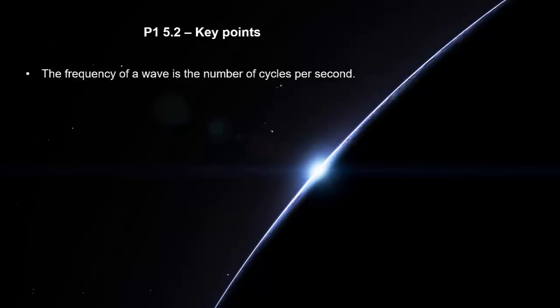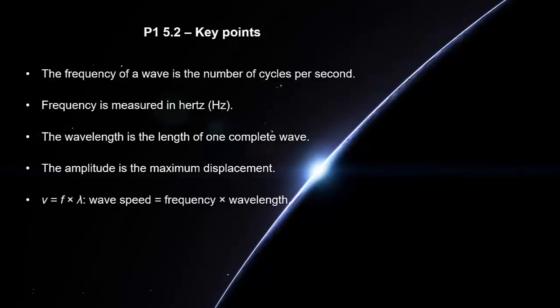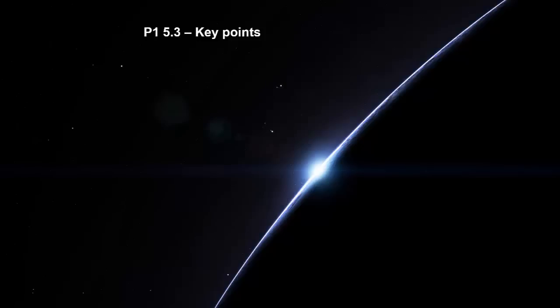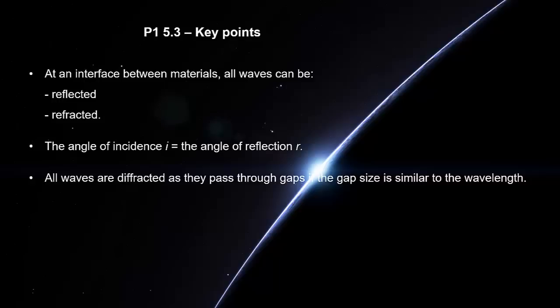The frequency of a wave is the number of cycles per second. Frequency is measured in Hertz. The wavelength is the length of one complete wave. The amplitude is the maximum displacement. Wave speed equals frequency times wavelength. The wave speed depends on the medium. At an interface between materials, all waves can be reflected or refracted. The angle of incidence equals the angle of reflection. All waves are diffracted as they pass through gaps if the gap size is similar to the wavelength. Diffraction is greatest if the width of the gap equals the wavelength.